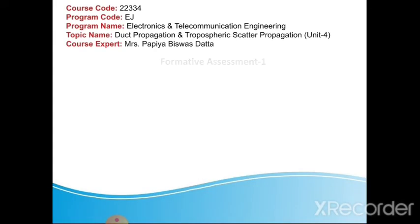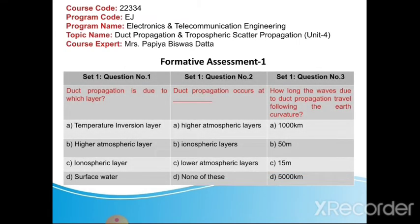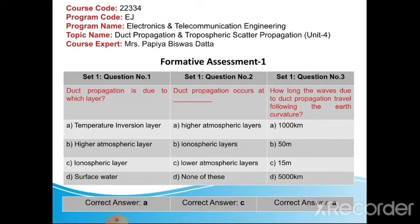Now let us take a minute and try to answer these questions. I hope you got the answer. Duct propagation is due to the temperature inversion layer. Duct propagation occurs at lower atmospheric layers, and the waves due to duct propagation travel following the earth's curvature up to 1,000 km.